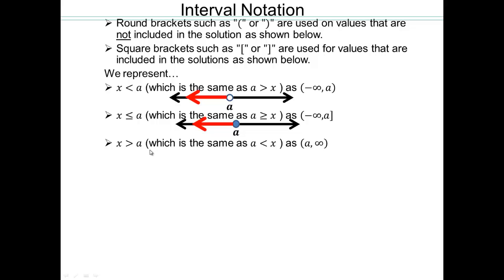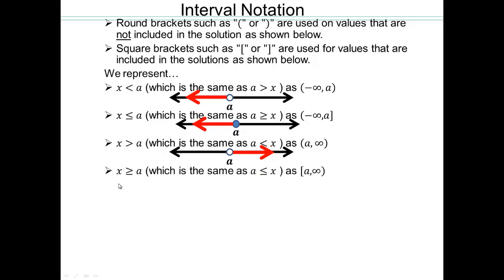Now, x is bigger than a — it's the opposite, going in the positive direction. Again, a is not included, so round bracket at a and going to infinity. If you have an infinity or negative infinity, that side always gets a round bracket because you can never catch infinity. For x greater than or equal to a: same picture as x greater than a, except a will be filled in, with a square bracket at a. Round bracket at a means a is not included; square bracket at a means a is included. Infinity is never included, so it's always a round bracket at infinity.